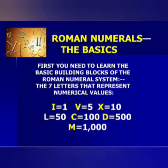Now dear students, let's see the basics of Roman numerals. First you need to learn the basic building blocks — the 7 letters that represent numerical values. I means 1, V means 5, X means 10, L means 50, C means 100, D means 500, and M means 1000.